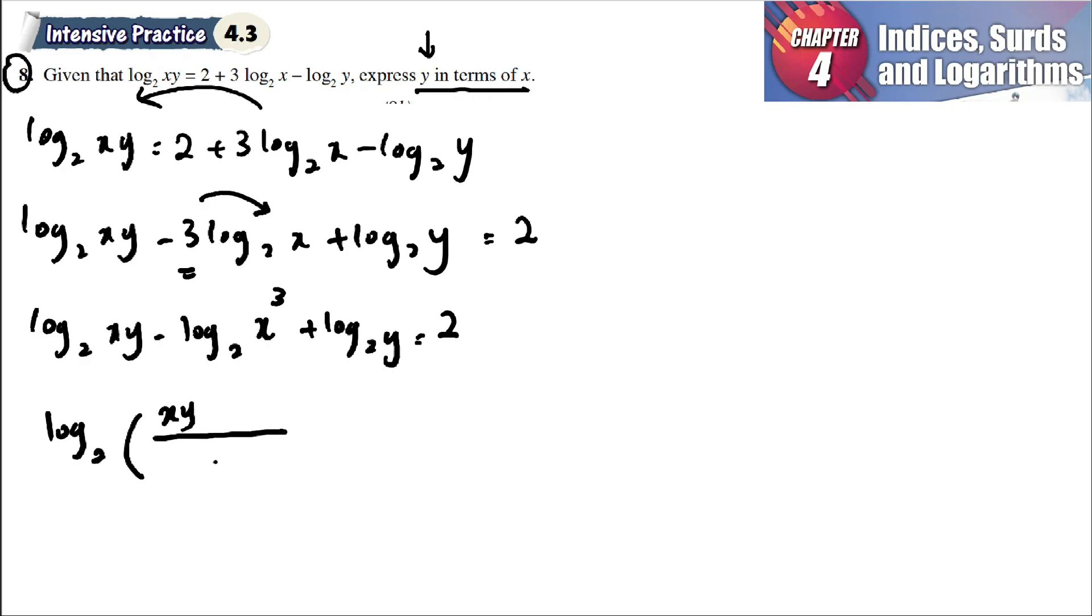Now we can combine. Log base 2 of xy minus means you have to divide with x cubed, and up here would be multiply. Log base 2 is out here, so this one is y times y. Log base 2 of xy squared divided by x cubed is equal to 2.